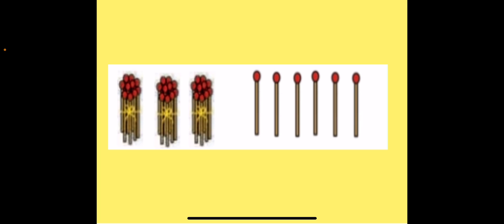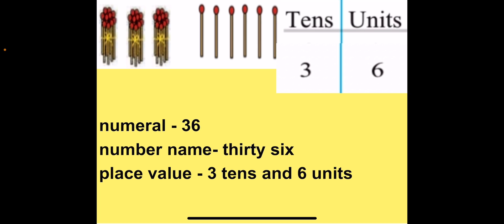Now we have 3 tenths and 6 units. When we have 3 tenths and 6 units we get number 36. So the number after 35 is 36, where 3 is in tenths place and 6 is in units place. The number name for 36 is THIRTY-SIX. The place value for 36 is 3 tenths and 6 units.